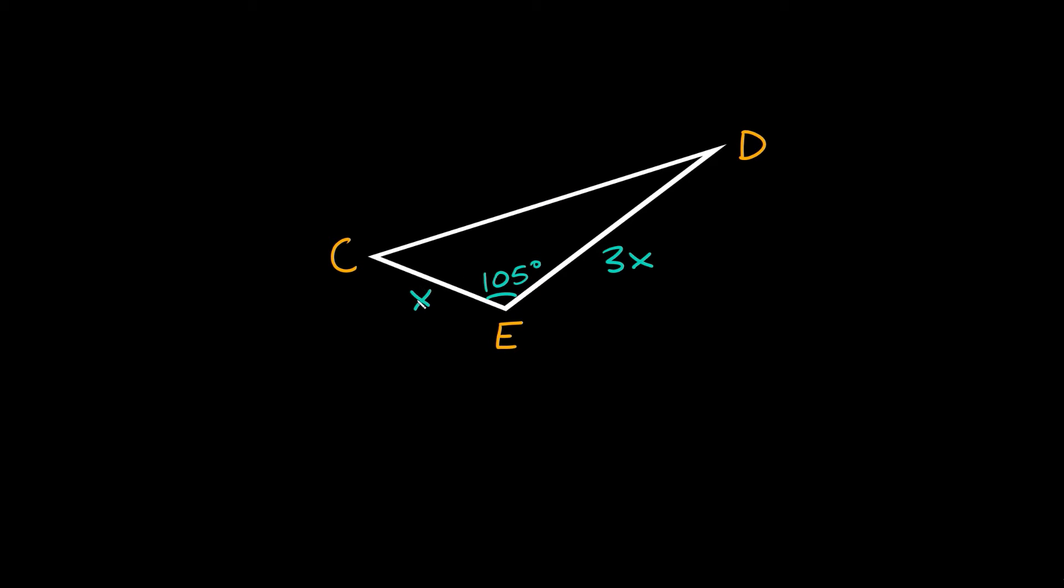Alright here's the last one and it's a little bit different, so it doesn't give us exact lengths, it just tells us that this side over here is X and then this kind of longer side over here is 3X, so we can basically see that this longer side is three times as long as this shorter side. And it also gives us this single angle of 105 degrees.